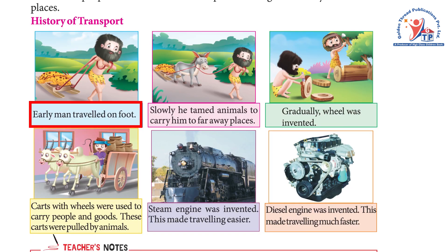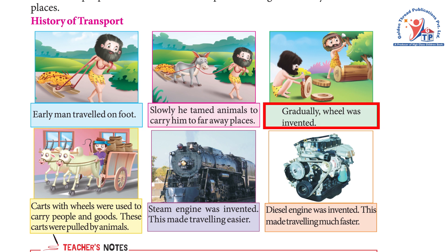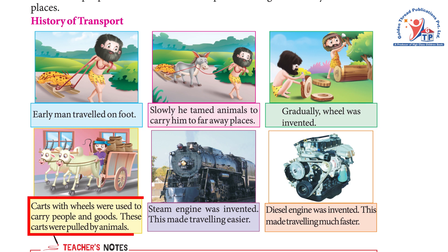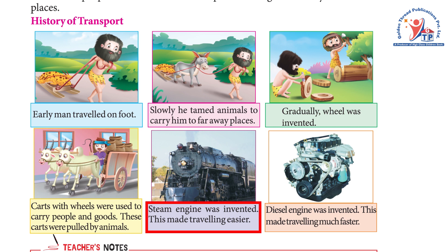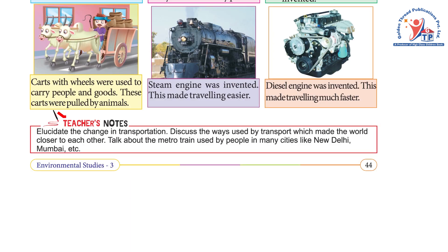History of transport: Early man traveled on foot. Slowly, he tamed animals to carry him to faraway places. Gradually, the wheel was invented, and carts with wheels were used to carry people and goods. These carts were pulled by animals. Then the steam engine was invented, which made traveling easier.